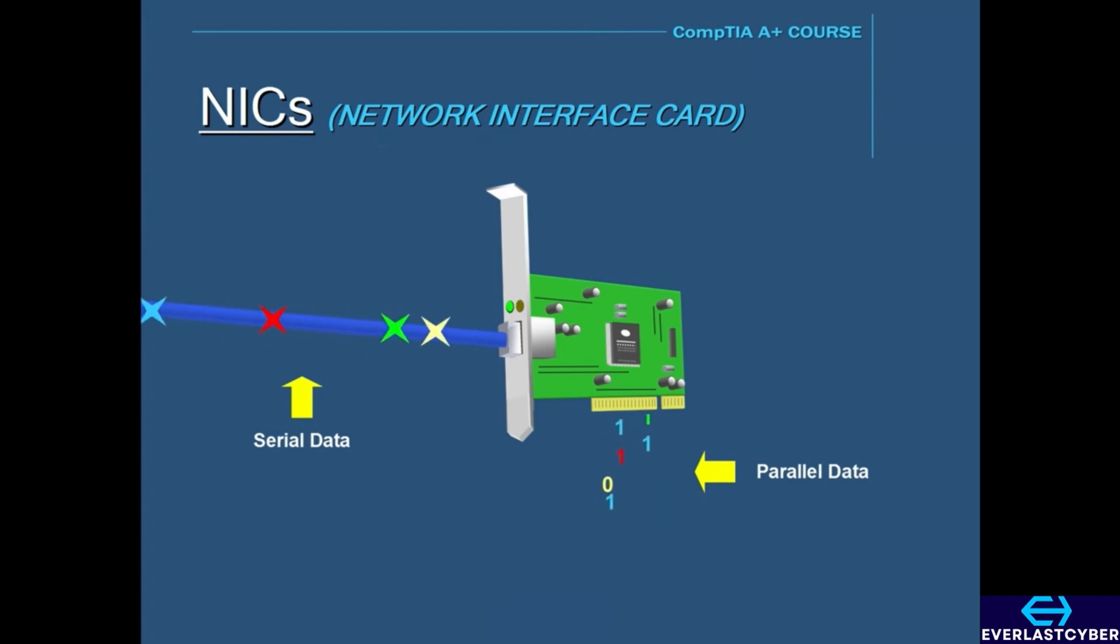A NIC provides a constant, dedicated connection to a network. And every NIC has its own unique identifier, called a MAC address.